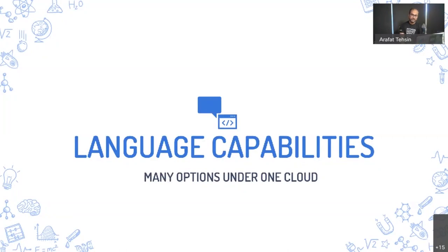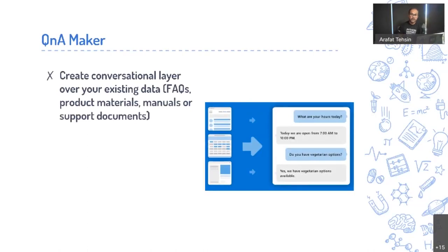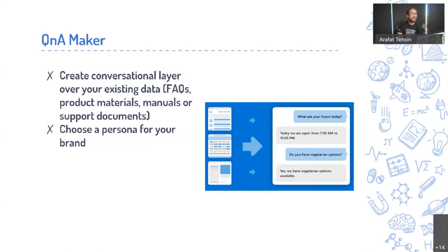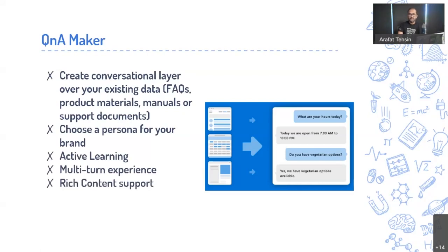These language capabilities are the brains of conversational AI. First, we have QnA Maker — a Cognitive Service that lets you build a conversational layer on top of existing data like FAQs and documents. It supports personas — professional, witty, or friendly — out of the box, and also supports active learning, multi-turn experiences, rich content, and more than 50 languages.